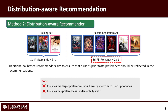However, there are also some drawbacks for distribution-aware recommendations. First, they assume that the target preference — the one we follow to recommend — should exactly match users' prior ones. And second, they assume such preference is fundamentally static. These two assumptions are widely used in distribution-aware recommenders, but are they true? To verify this, let's dive into it with some real-world examples.